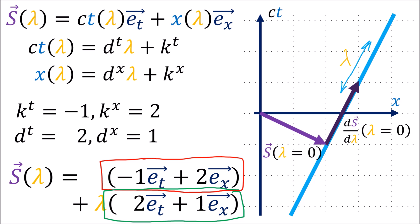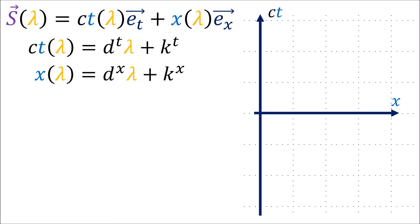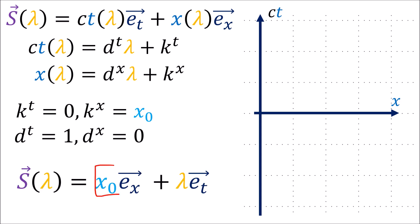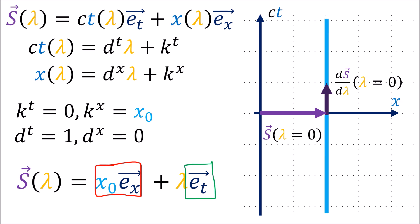This world line represents someone traveling to the right at constant velocity. Another example is given by setting k_t equals 0, k_x equal to a constant x0, dt equals 1, and dx equals 0. The initial position vector is x0 e_x, the initial direction is e_t, and choosing different values of lambda puts us anywhere on this line. This geodesic world line represents the world line of an inertial observer that is stationary and not moving in space. So we've confirmed that in inertial coordinate systems, geodesic curves — which give us inertial reference frames — are straight lines.